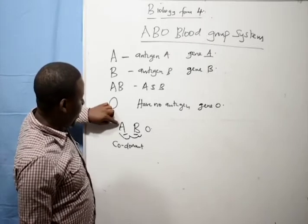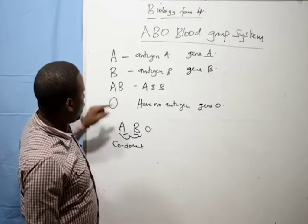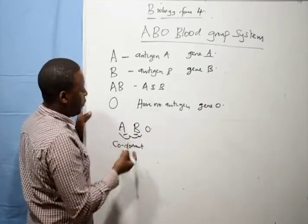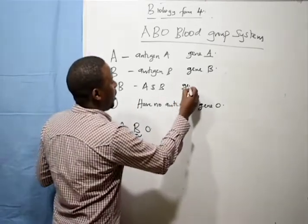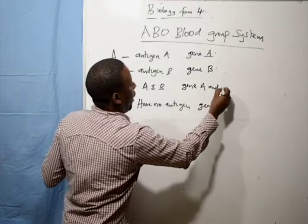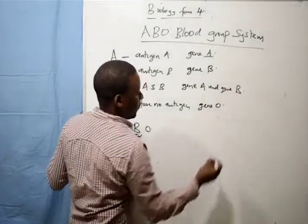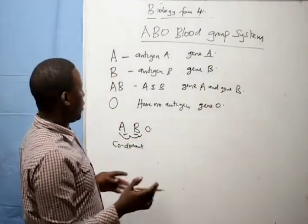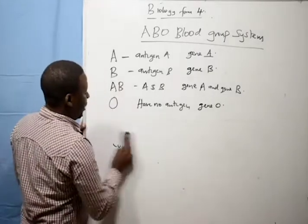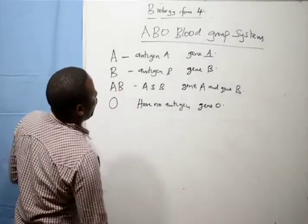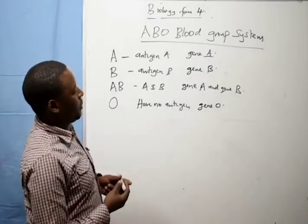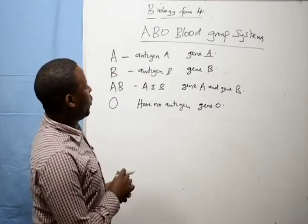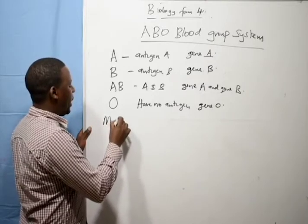When gene A and gene B are both present, the individual will have antigen A and antigen B, and will become blood group AB. Those with blood group AB have gene A and gene B. Because these two genes are codominant, both antigens are produced. The ABO blood group system is controlled by three major genes — gene A, gene B, and gene O — which is known as a case of multiple alleles.